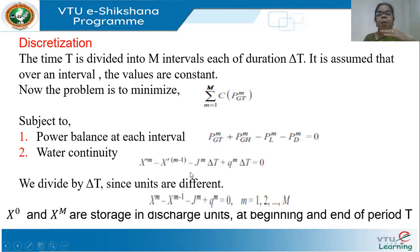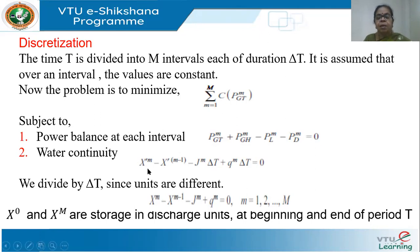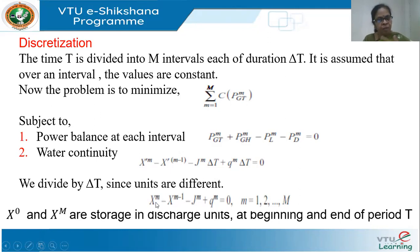The water continuity equation is discretized as: X^m − X^(m−1) − J^m + Q^m = 0. Here the integral of J·dt becomes J^m·Δt, and similarly for Q^m·Δt. Dividing everything by Δt, we get X^m − X^(m−1) − J^m + Q^m = 0, where X is now in discharge units (m³/s). X_0 and X_M denote the storage at the beginning and end of the interval.